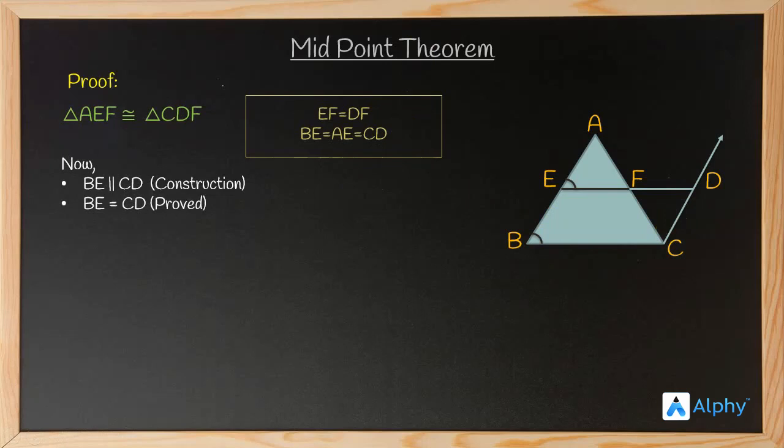We have done this property and according to the same property we can say that BCDE forms a parallelogram. But if BCDE forms a parallelogram, BE will be parallel to CD and ED will be parallel to BC. If ED is parallel to BC, can't we say that EF is parallel to BC? That was the task of the theorem or the property and we have proved it here.